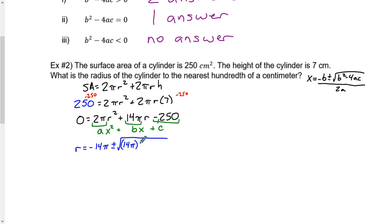14π squared, subtracting 4 times our a value which is 2π, times our c which is negative 250. All over 2a. 2 times 2π.